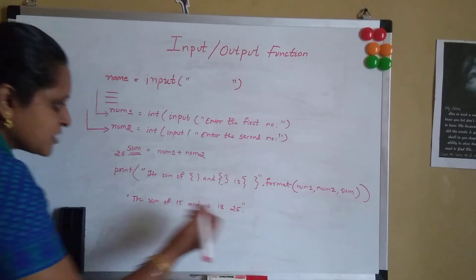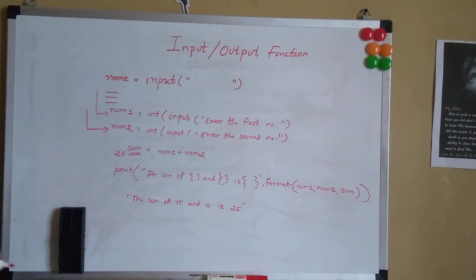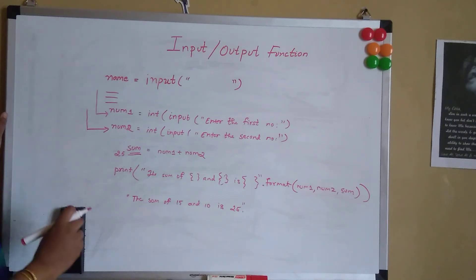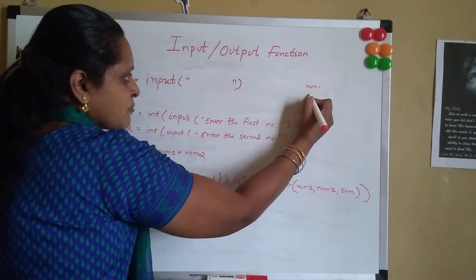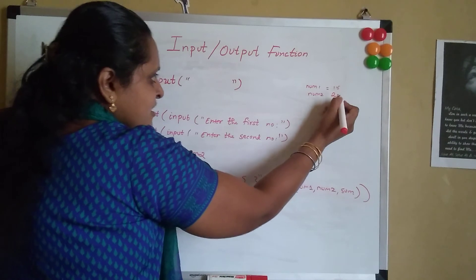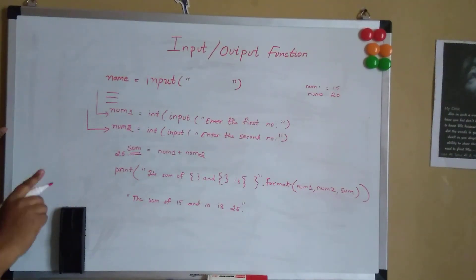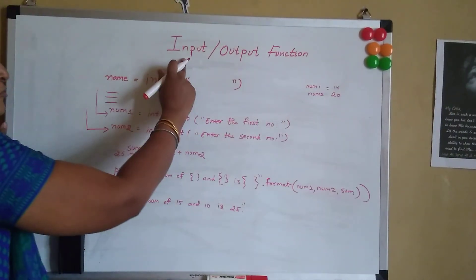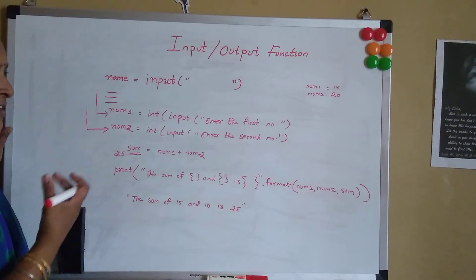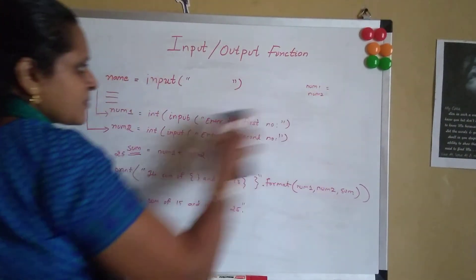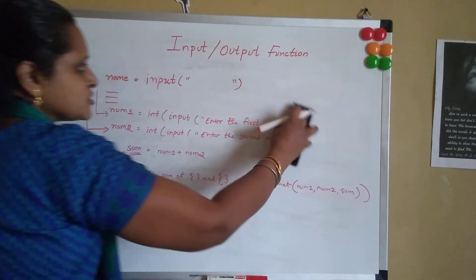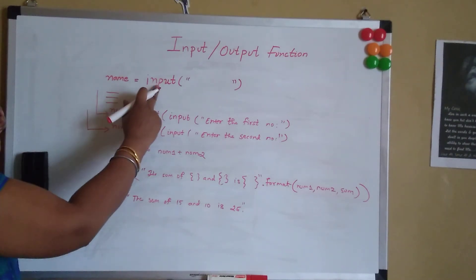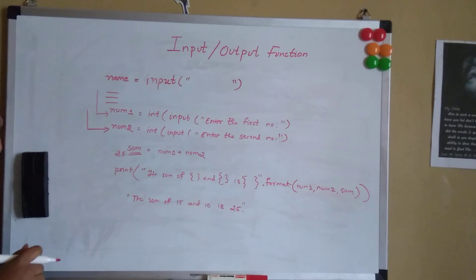This is how the value gets printed on the screen. One more advantage of using the input function is that we need not hard-code the value in the program. If you hard-code values, the program will execute only for those particular numbers. But if we want flexibility of taking different values, we use the input function so we can get values at runtime from the user himself.